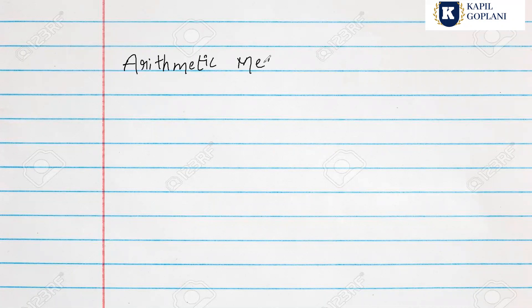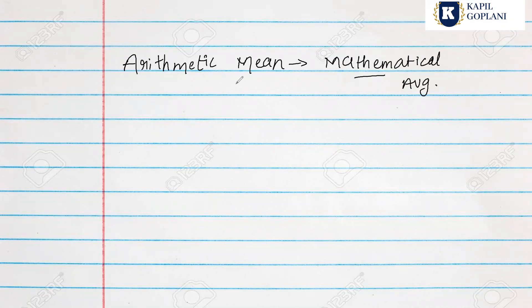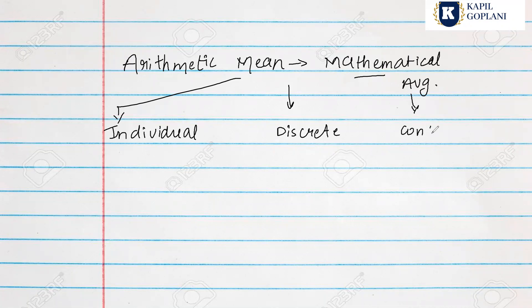Arithmetic mean is a mathematical average. For every topic — mean, median, and mode — we have three types of series: Individual Series, Discrete Series, and Continuous Series. Each series has different formulas. Individual series has one formula, discrete has a different formula, and continuous has yet another formula.